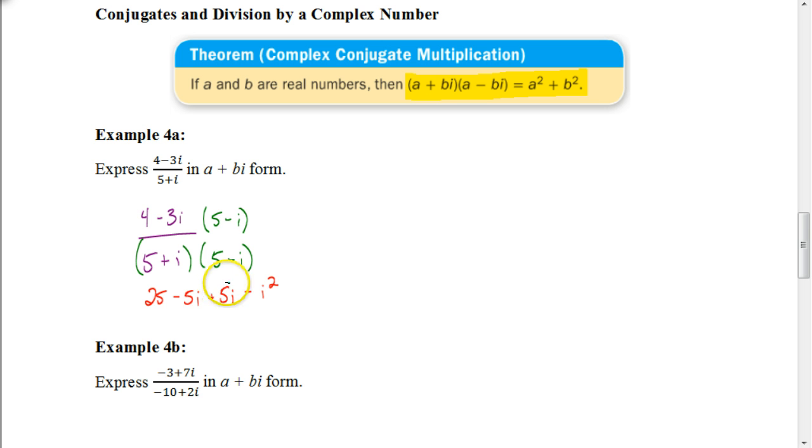Now there's some things that we should notice here. We should notice that the middle terms would cancel each other out, because negative 5I plus 5I is 0. And that's always going to be the case whenever you multiply two conjugates together, whether they're just basic conjugates like 2X plus 7 and 2X minus 7, or in this case, if they're complex conjugates, the middle terms will cancel each other out.